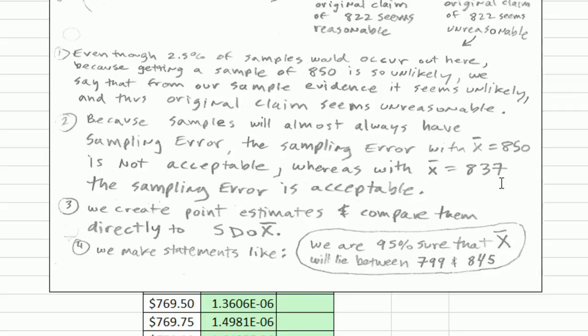Now in this chapter, we have created point estimates and compared them to the sampling distribution of x-bar. And we make statements like, we are 95% sure that the x-bar lies between 799 and 845. Now next chapter, when we don't know the population mean or standard deviation for the population, we're not going to be able to make statements like this. But we'll go out and take a sample. And instead of comparing x-bar directly to a known population mean, we'll make what's called a confidence interval. And we'll have similar statements, but they'll be called confidence interval. All right, I can't wait for chapter 8. See you next video.